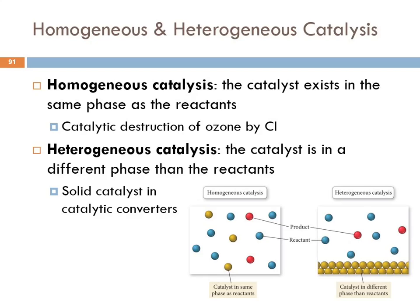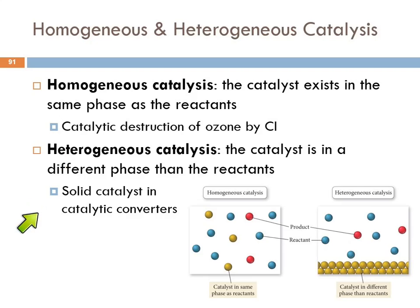There are two basic types of catalysis: homogeneous and heterogeneous. When we apply these terms to catalysis, we're talking about the phase of the reactant and the catalyst. The catalytic destruction of ozone by chlorine atoms is homogeneous catalysis—the ozone and chlorine atoms are both in the gas phase, the same physical state. Heterogeneous catalysis is what happens in the catalytic converter: you have a solid catalyst but the reactants are in the gas phase—two different states.